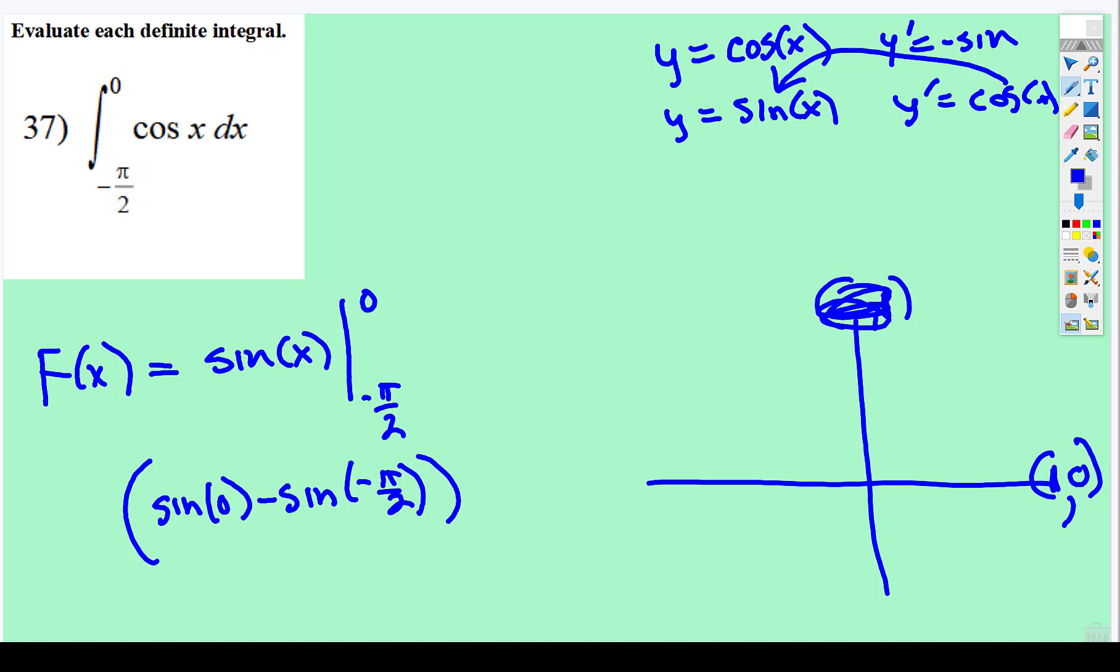And negative π/2 is the same thing as 3π/2, where sine is negative 1. You could also type that into your calculator.